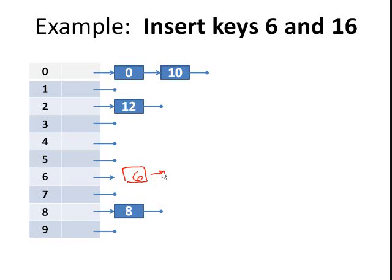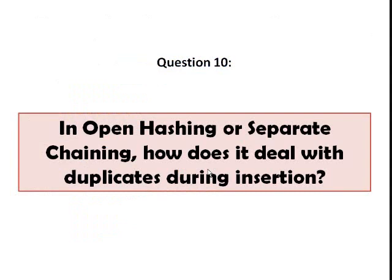If you add 16, again, you'll get the same index value which is 6. Then just append it to your linked list and put 16 there. That's how chaining or open hashing works.